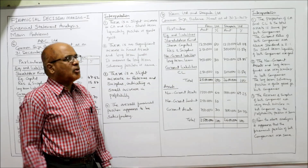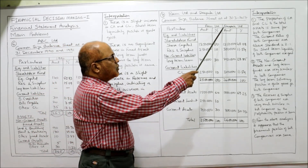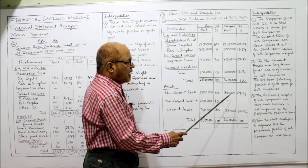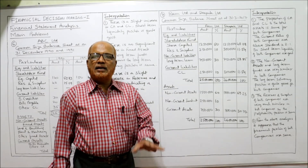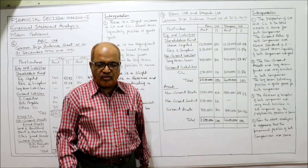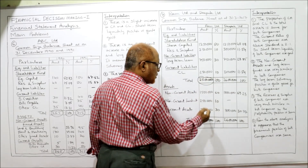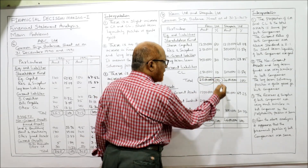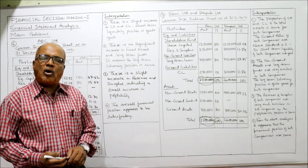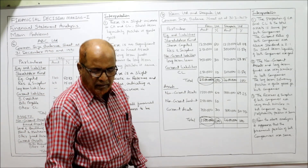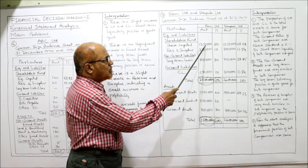The balance sheet tallies: Ram Limited total liabilities 25 lakh, total assets 25 lakh. Deepak Limited total liabilities 26 lakh, total assets 26 lakh. Now calculate the percentages. Since it is a balance sheet, total assets are taken as 100%. For Ram Limited, 25 lakh is 100%. Express all other items as a percentage of this total, so 25 lakh is the denominator for all calculations.